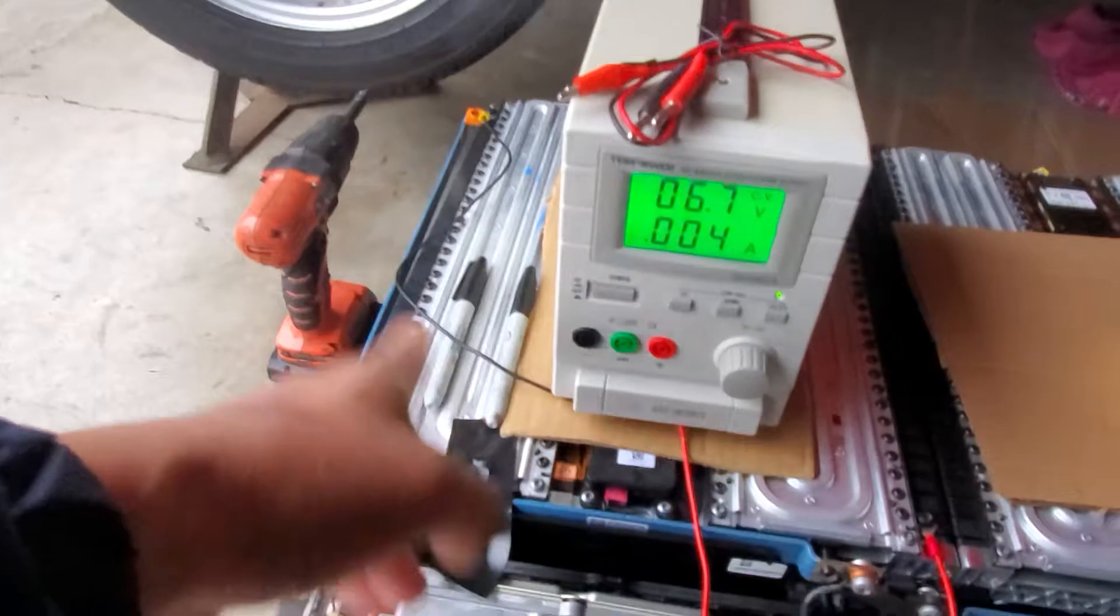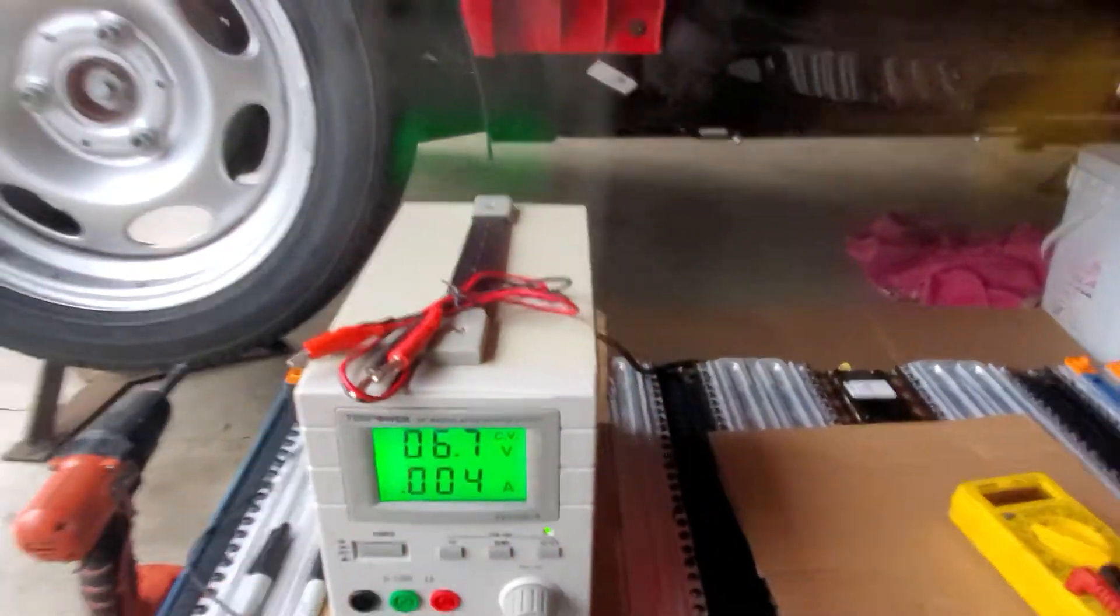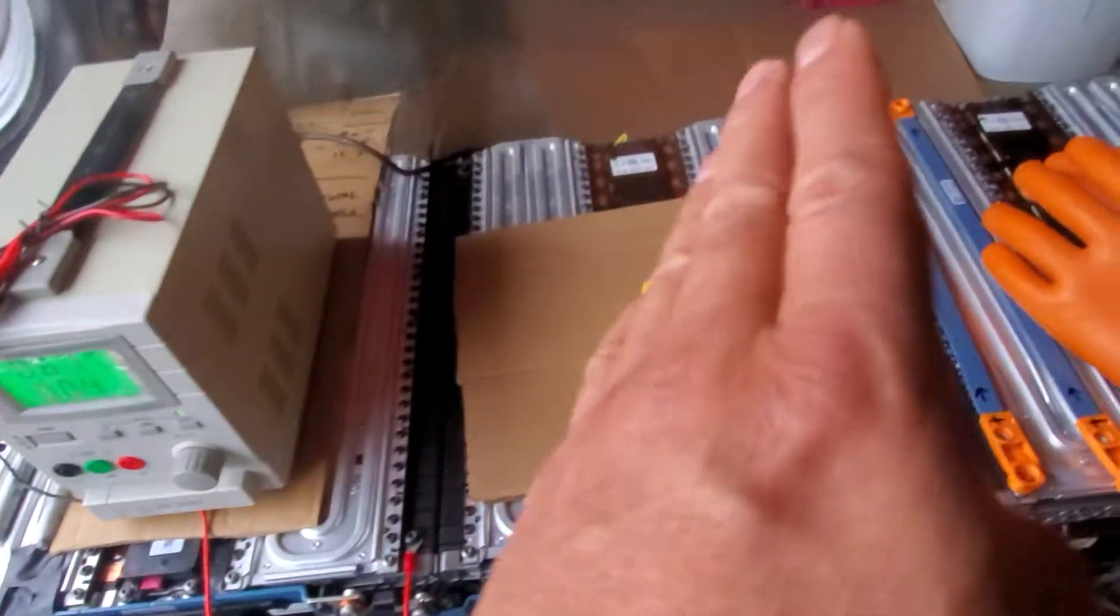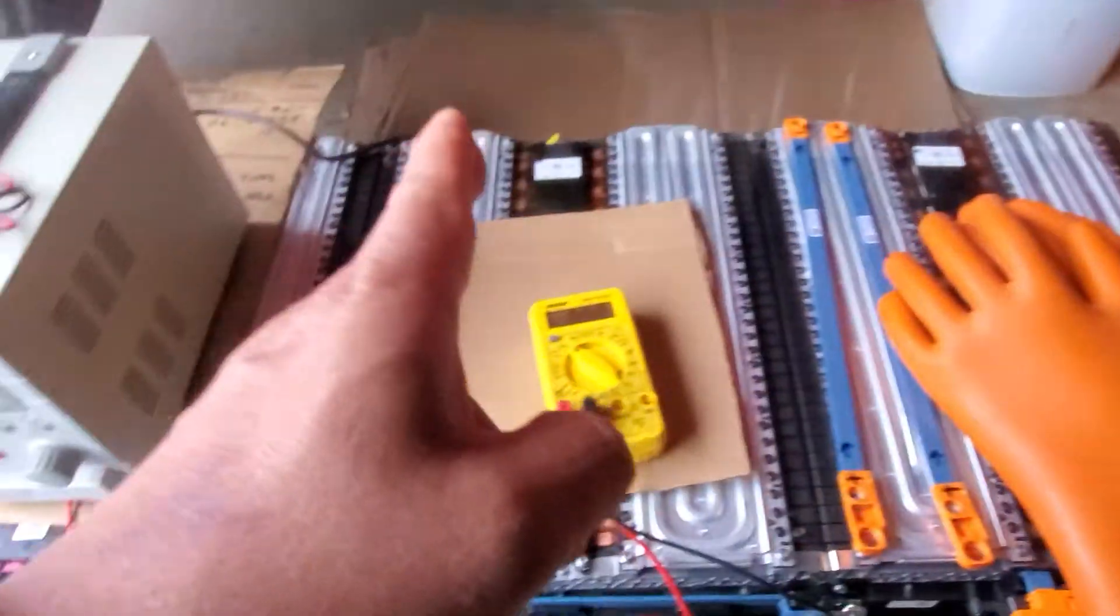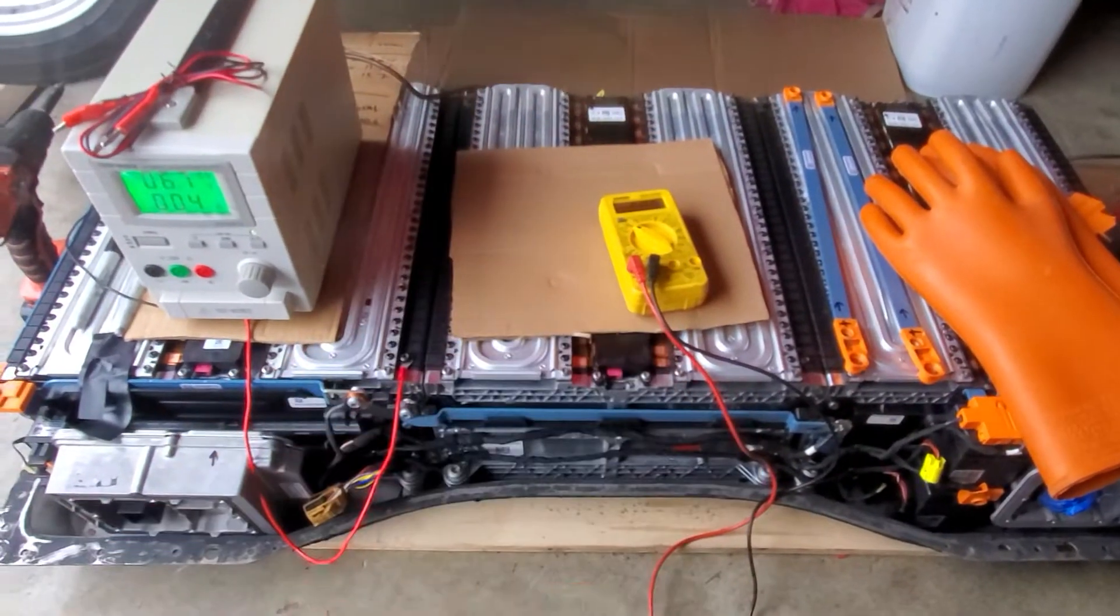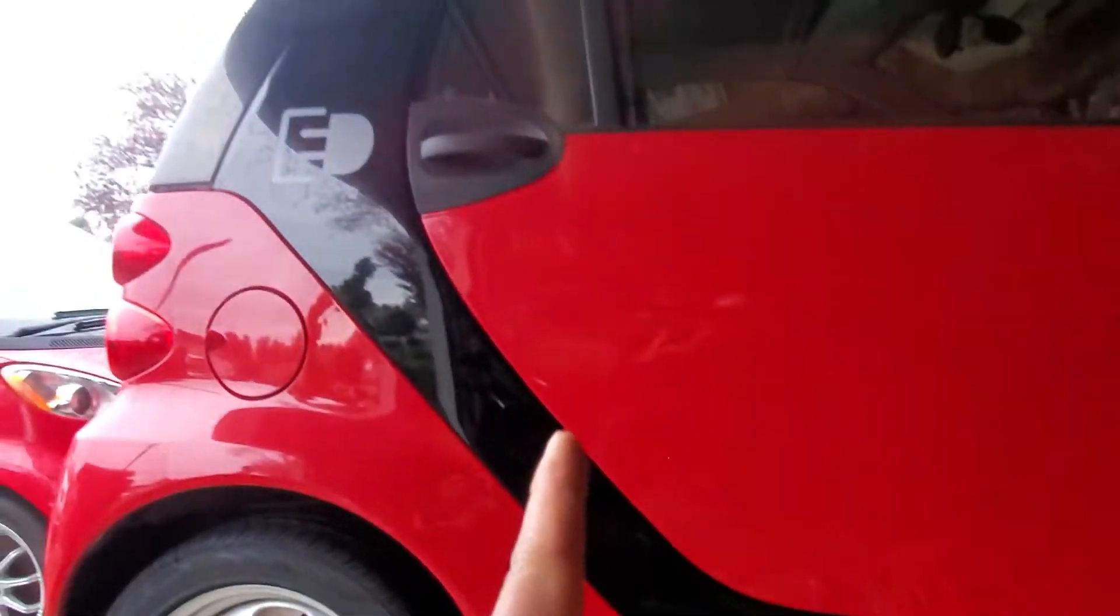But right now this module only got 6.7 volts, so I'm going to charge maybe another five days. This one I charged for five days, this one 32, 92, and then the total voltage is going to be 330 volts together. And then we put it back underneath.